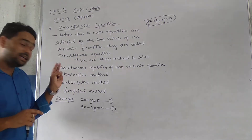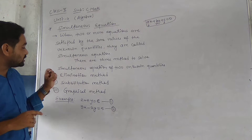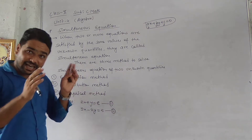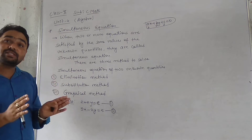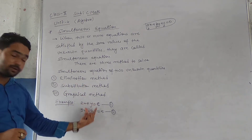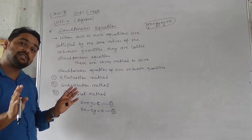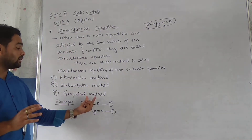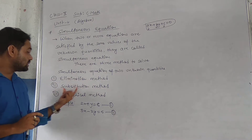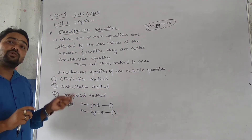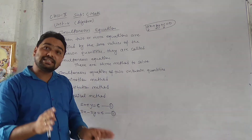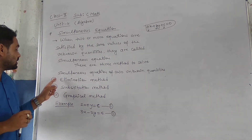We are not going to only do the elimination, substitution, and graphical way solving of given equations. In class 10, we are going to make the equation or simultaneous equation from word problems — what problem is given. We make the equation first on the basis of the condition, and then we use the knowledge gained from class 9 about elimination and substitution. We will use just elimination and substitution, as the graphical method takes time — we have to plot on a graph.